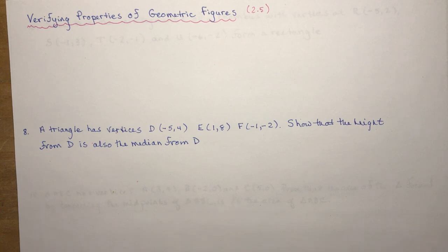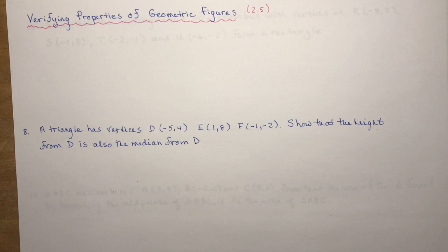Verifying properties of geometric figures. This comes from section 2.5 of the Nelson Grade 10 textbook. Basically what you're going to be doing is showing that certain properties exist with different shapes on a coordinate plane, where they give you coordinates and such.